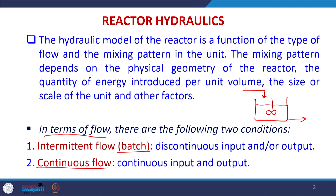In a batch process there is no flow in or flow out during the treatment process. If there is only flow out or only flow in during treatment, that condition is called a semi-batch reactor. When a reactor has a continuous flow of reactants and the products are also being taken out continuously, that condition is called continuous flow — with continuous input and continuous output.